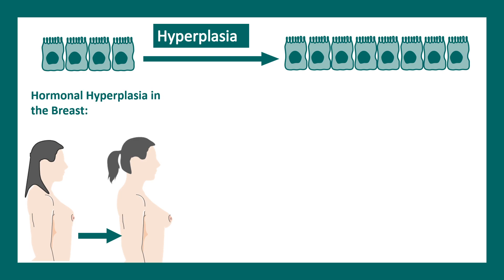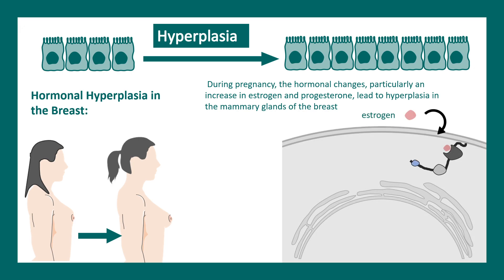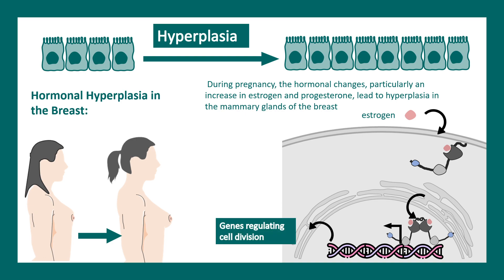Let's take the example of hormonal hyperplasia in the female breast. During puberty there is a dramatic increase in breast size in females. During puberty and also during pregnancy, estrogen and progesterone levels fluctuate, leading to mammary gland hyperplasia. Estrogens are steroid hormones that bind to estrogen receptors, which then bind to specific estrogen response elements in the DNA. This leads to transcription of several genes responsible for cell division and cellular proliferation, increasing the number of cells that form the mammary gland — and that's how the entire breast becomes bigger.